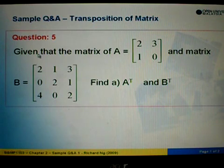We are given that the matrix A, this is a 2 by 2 matrix, and we are also given a 3 by 3 matrix. We are asked to find A to the power of T. A to the power of T means find the transposition of matrix A. The same goes for transposition for matrix B.